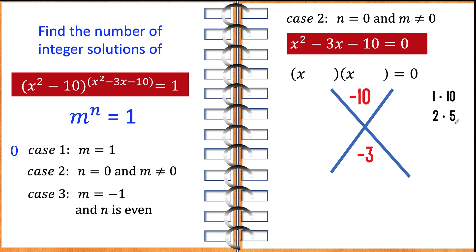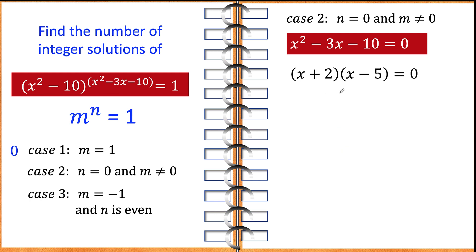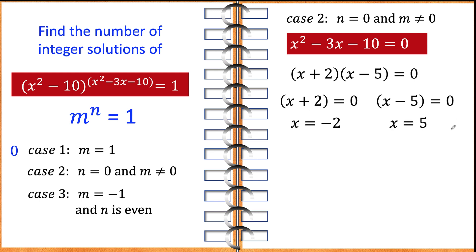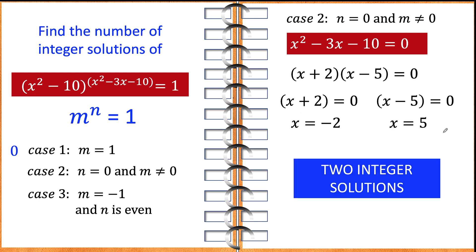The higher of the two factors must take the negative sign. If those two factors are 2 and negative 5, their product is negative 10 and their sum is negative 3, which is the coefficient of the x term. Therefore, we can write this as x plus 2 times x minus 5. From the zero product property, each factor is equated to zero, giving x equals negative 2 and x equals positive 5. There are two integer solutions for case number 2.